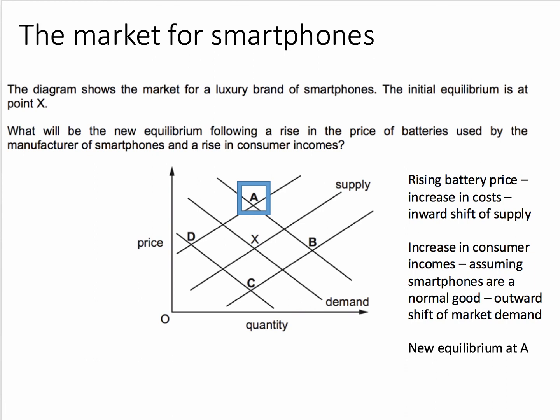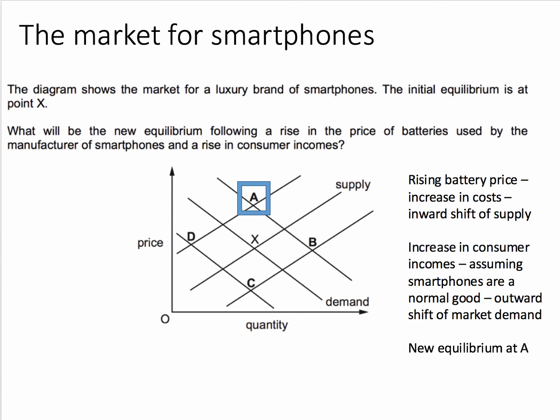So the new intersection is the inward shift of supply and the outward shift of demand, which is at point A. The equilibrium point is A. And that's the answer to this particular question.